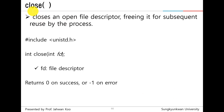Close system call. Using the close system call, you close — that is to say, return — an open file descriptor, because it can be reused in the future.